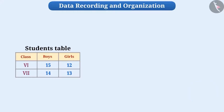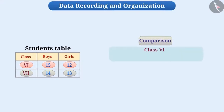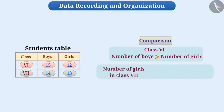With the help of this table, we get various information. There are 15 boys and 12 girls in class 6, and 14 boys and 13 girls in class 7. Similarly, the table can also be used to compare numbers — for example, the number of boys in class 6 is more than the number of girls, and the number of girls in class 7 is 1 more than the number of girls in class 6.